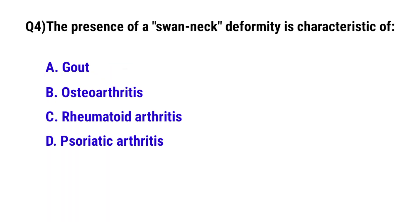Question number 4: The presence of a swan neck deformity is characteristic of? The correct option is C: Rheumatoid arthritis.